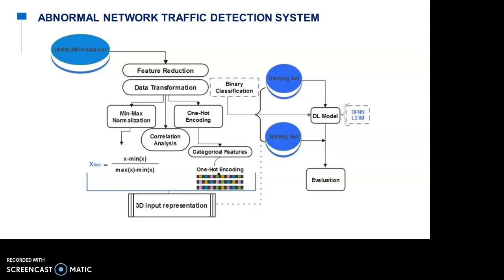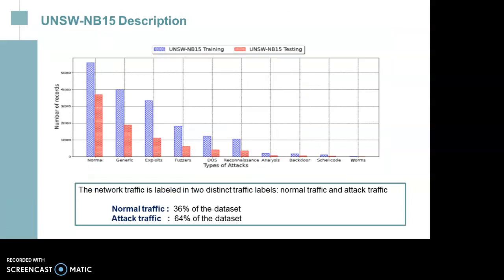Our experiments are constructed to assess the effectiveness of the feed-forward deep neural network and long short-term memory models, to demonstrate the utility of real network traffic data in intelligent online detection. The methodology consists of preprocessing, configuration steps, and building models and evaluation. UNSW-NB15 is used as a real dataset to evaluate the efficiency of the used models. UNSW-NB15 is used in intrusion detection experiments and evaluation by the NEADS research community. The dataset consists of 45 features and is labeled in two distinct traffic classes: normal traffic and attack traffic.